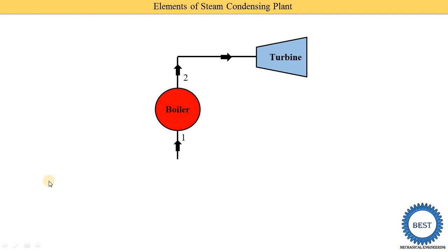The first element in the steam condensing plant is the condenser. There are two types of condenser possible. One is called jet type condenser and the second one is the surface condenser. In a jet type condenser, the steam and water both are mixed, and then it is supplied to the feed pumps.